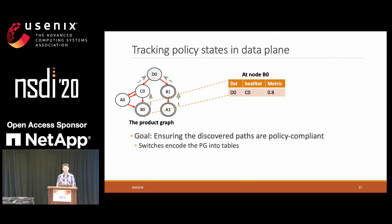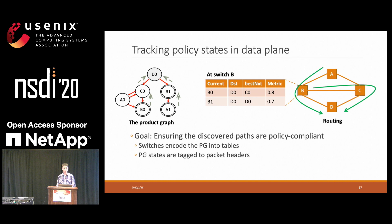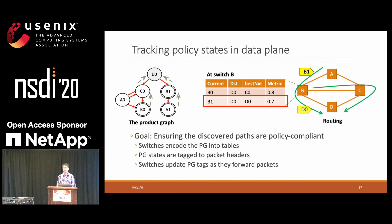To do this, we encode the Protagraph into tables on the switches. It is possible that we have multiple Protagraph states for a single switch, so we need to combine the forwarding tables into one table on the switch. For example, a path A1, B1, D0 corresponds to a path ABD on the network topology. So when traffic arrives at node B from node A, node B will look up the table and update the Protagraph tags accordingly, ensuring every packet is forwarded following the Protagraph.